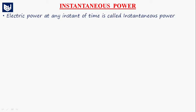Hi guys, today we are going to learn about instantaneous power. So what is instantaneous power? Instantaneous power is the power at any instant of time. Electric power at any instant of time is called instantaneous power.